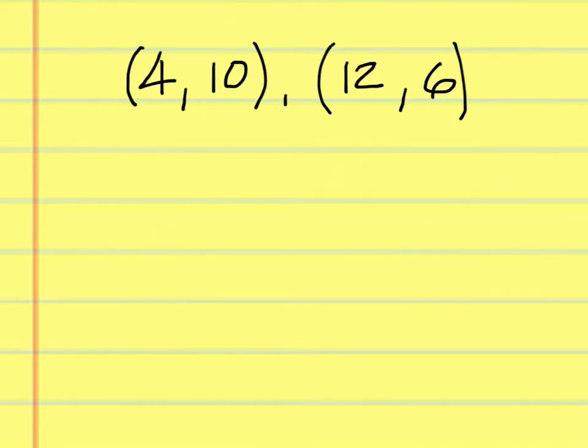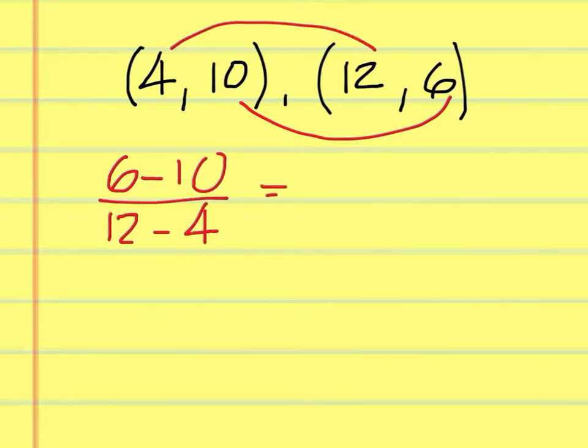To find the slope given these two points, you would do 6 minus 10 over 12 minus 4. And that's going to be negative 4 over 8, which reduces to negative 1 half.